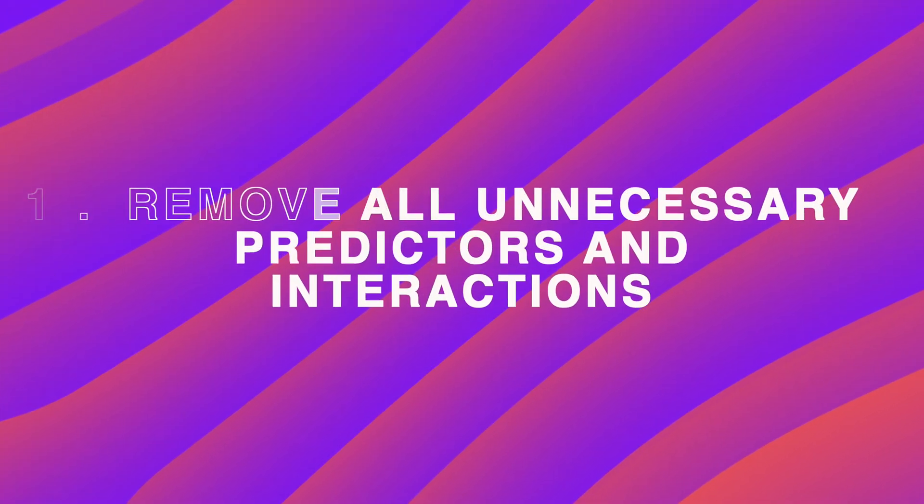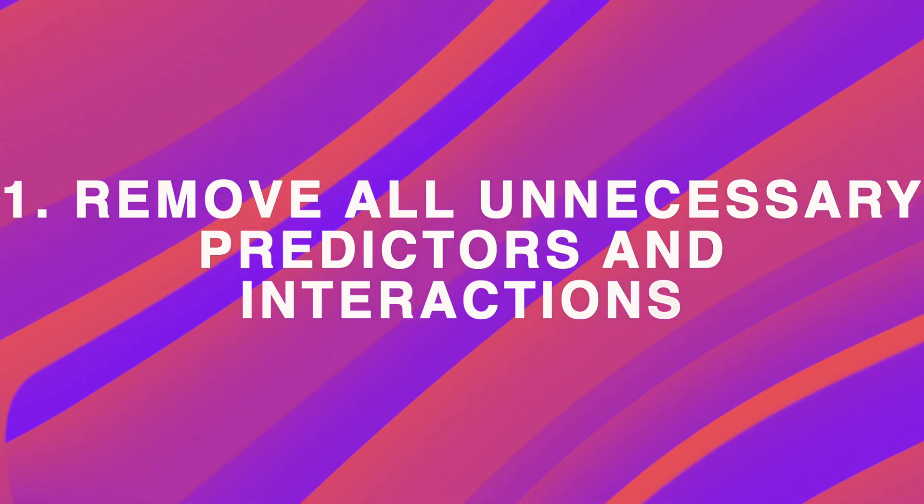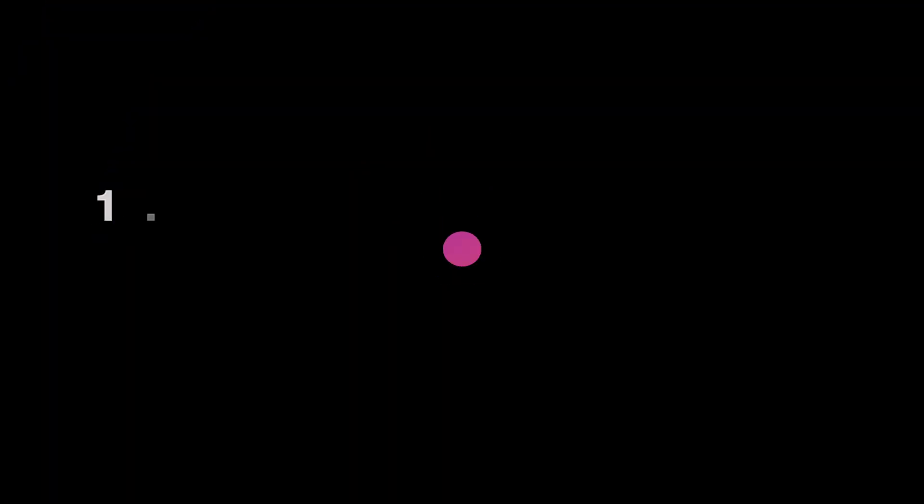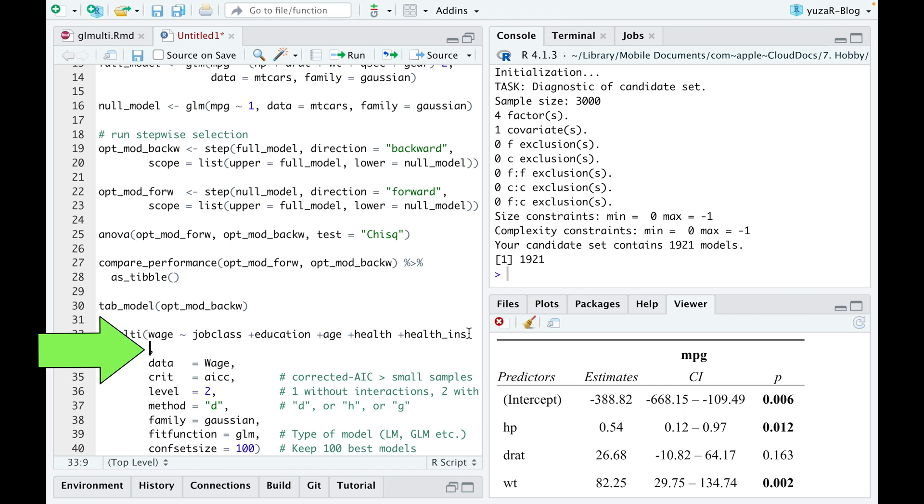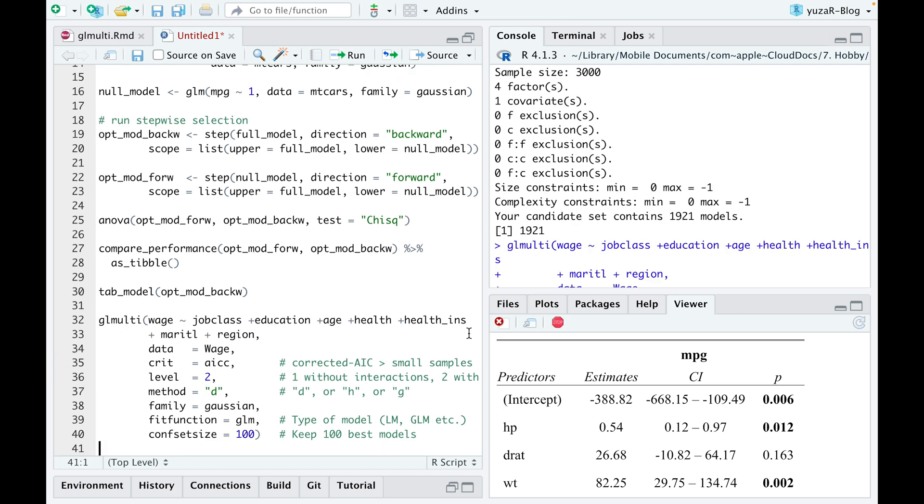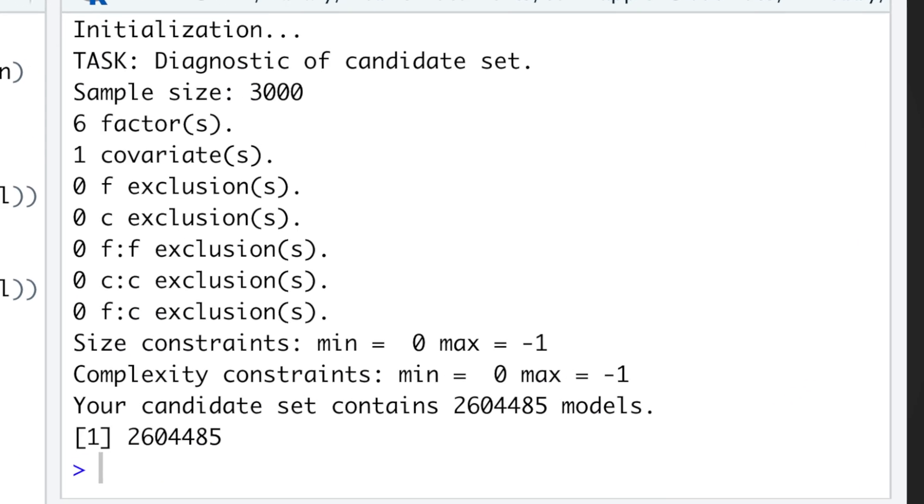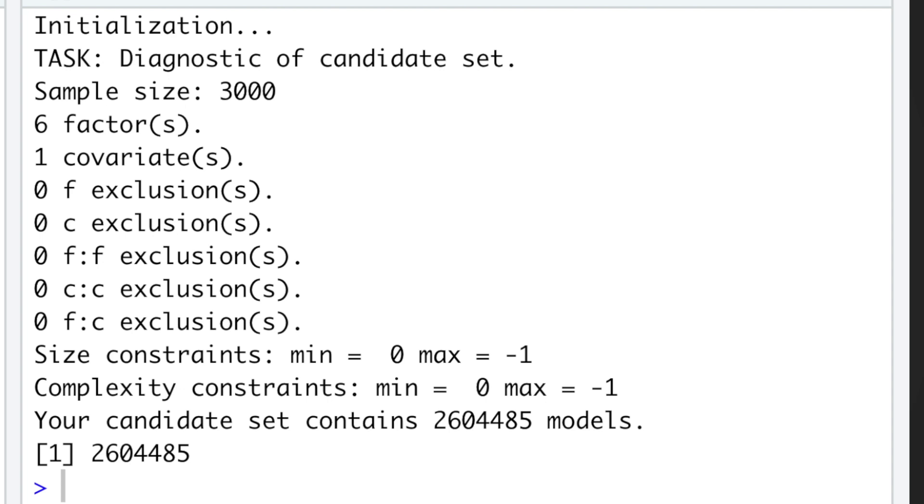And the first one is to remove all unnecessary predictors and interactions. Adding only two additional categorical predictors, marital and region, into the wage model above increases the number of models to over two and a half millions. And while it's unimaginable to run so many models in our lifetime, genetic algorithm provides a solution for it.